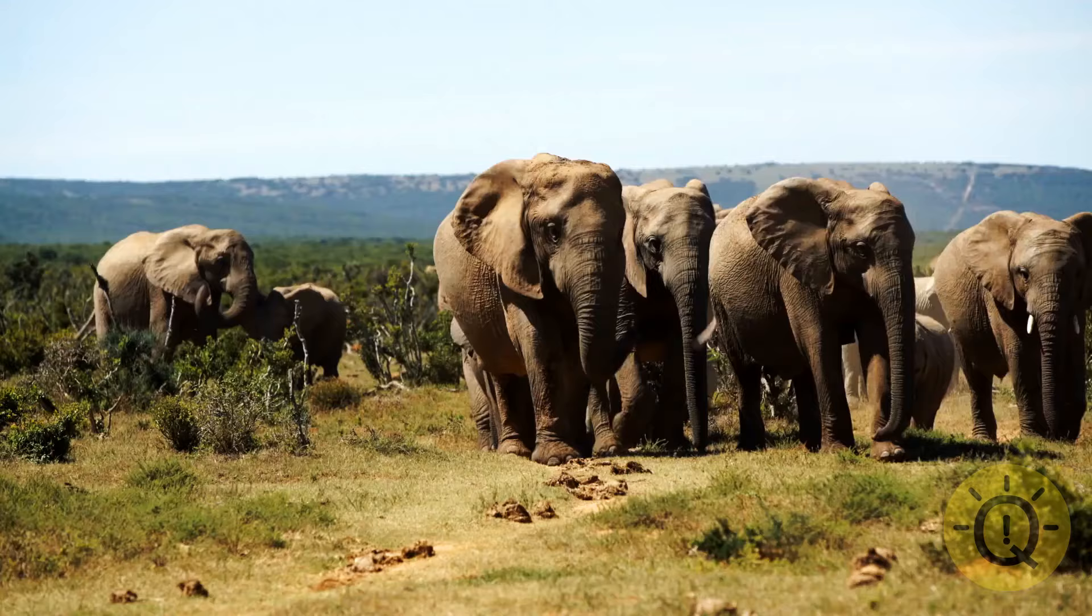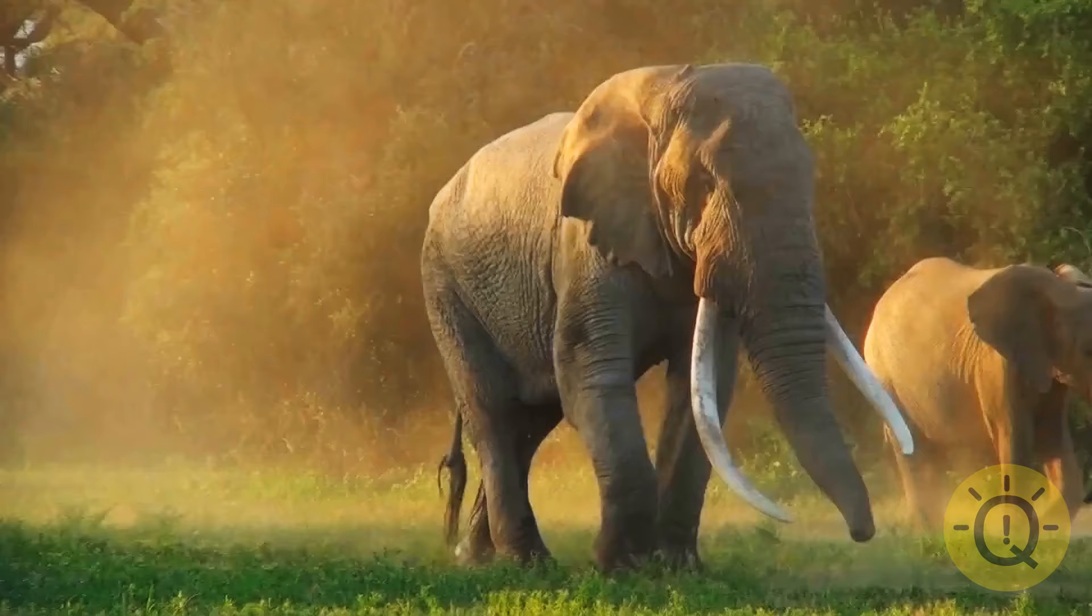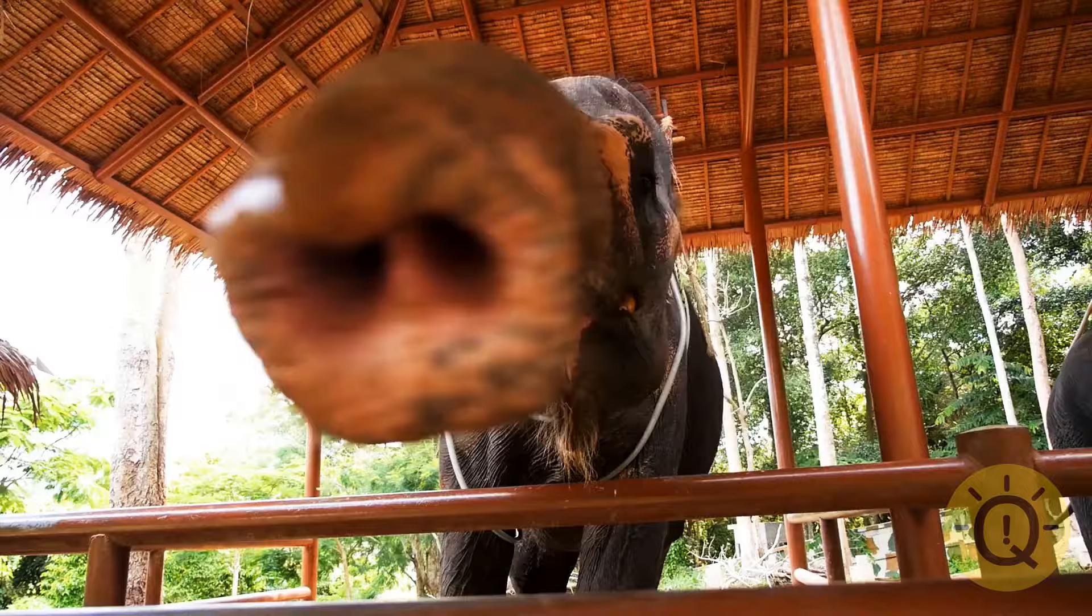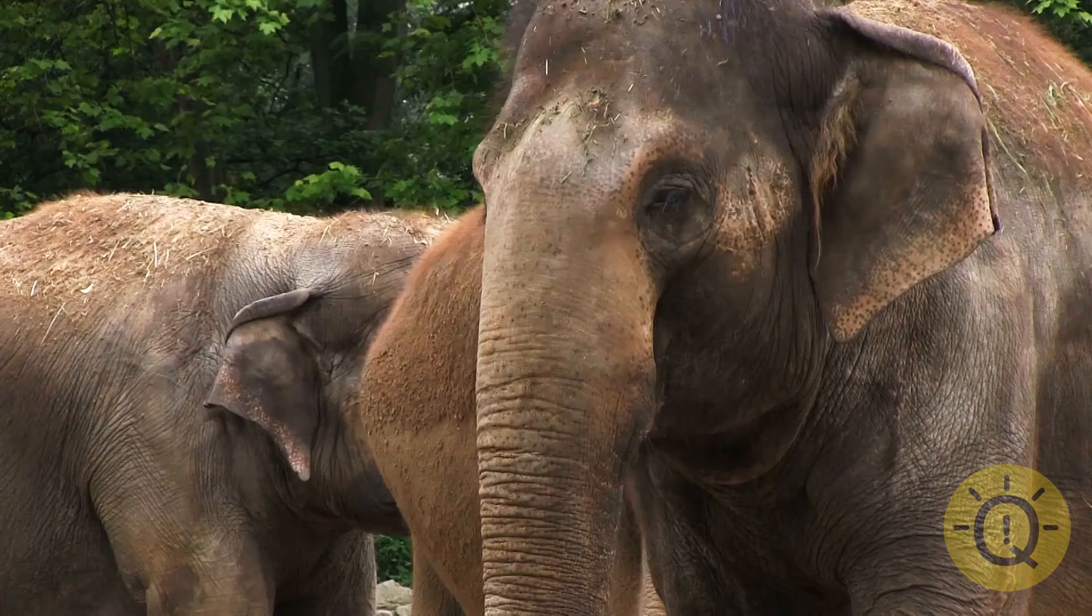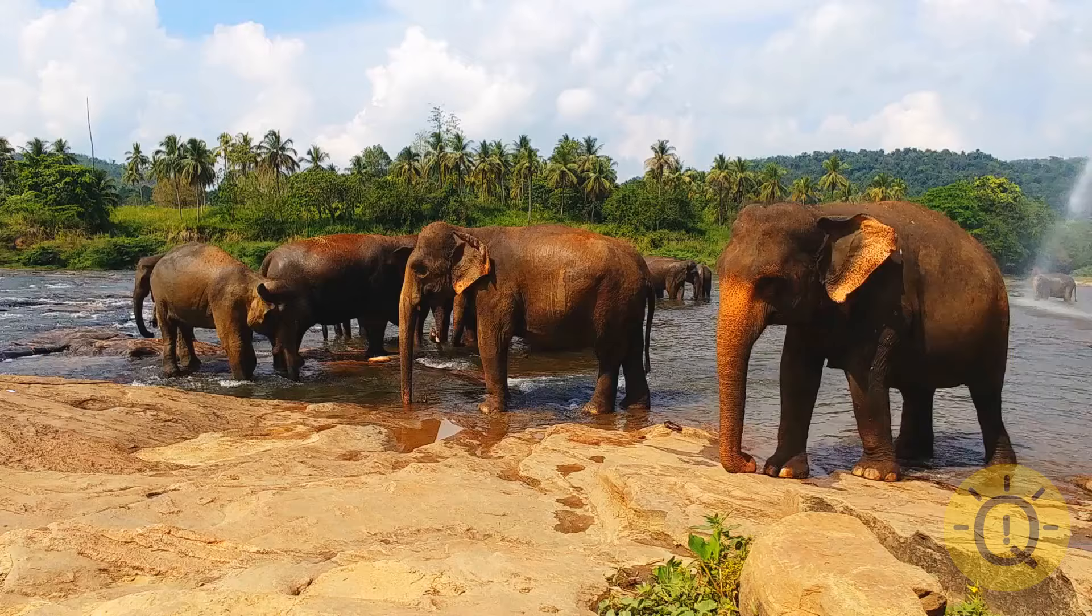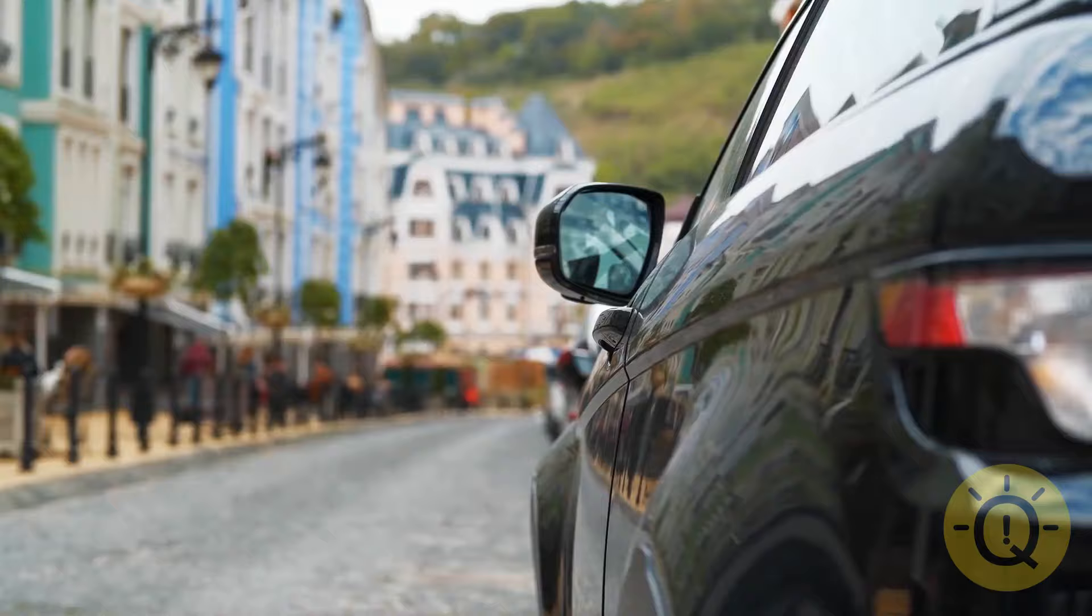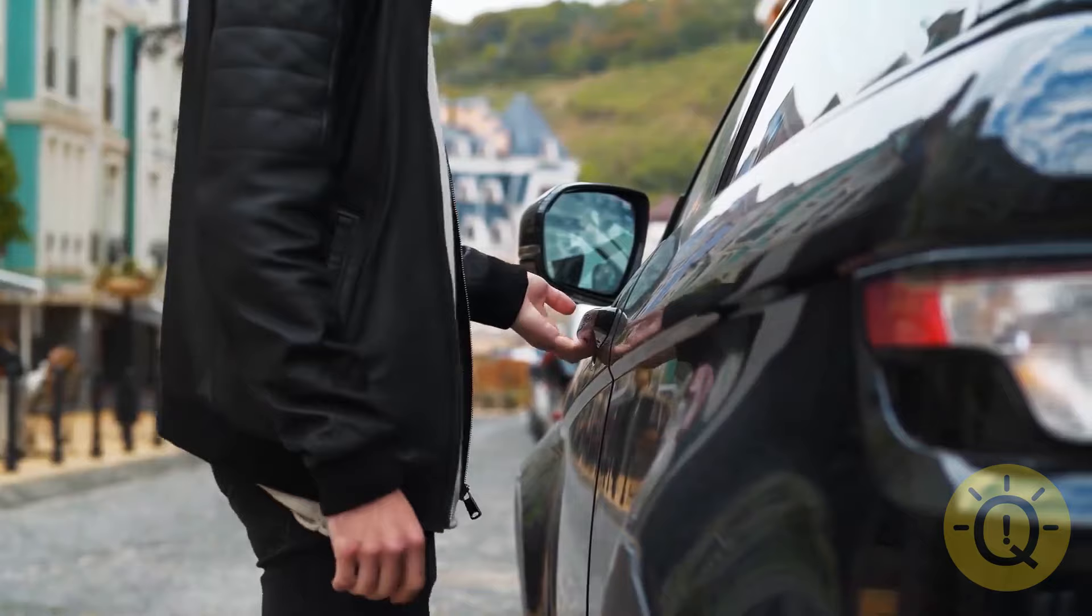An elephant never forgets. True. Having the biggest brain of all land animals, elephants should have a great memory. And they do. Being able to remember their entire territory, friends, and spots to find water is crucial to the social structure of elephants. They might even have a better memory than you and I. Now, where did I leave my keys?